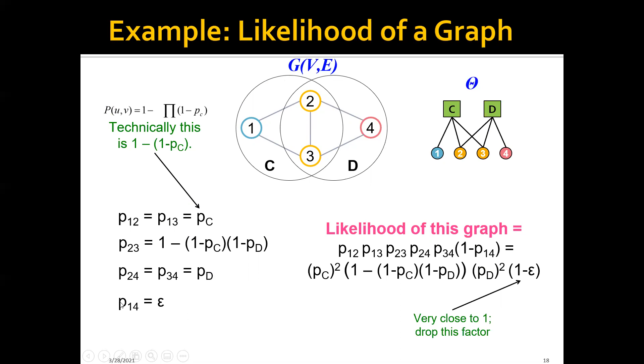And for the nonexistent edge, basically P(1,4), we need to use epsilon because 1 and 4 actually belong to different communities. So basically to calculate the likelihood of this whole graph, we only need to compute the products of all these terms.